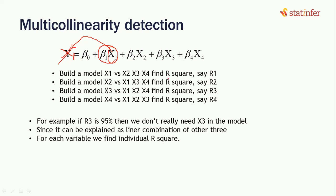We build this auxiliary model and record the R-squared value, calling it R1. We then do this one by one for x2, x3, and x4, recording R2, R3, and R4. For example, if R3 is 95%, we understand that x3 is highly correlated with x1, x2, and x4, since it can be explained as a linear combination of the other three. For each variable, if the R-squared value is more than 95%, we say that variable is multicollinear with the others and we remove it.